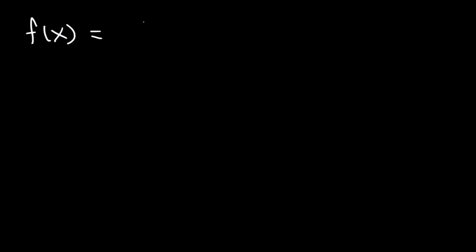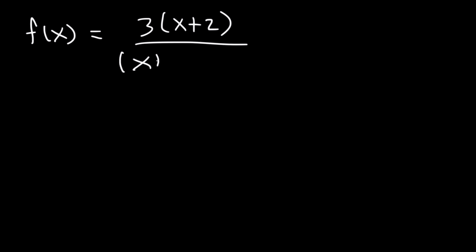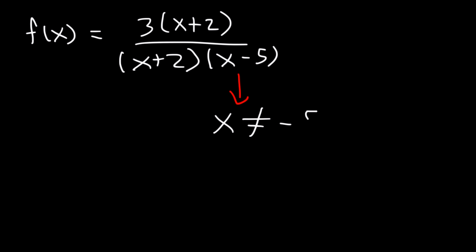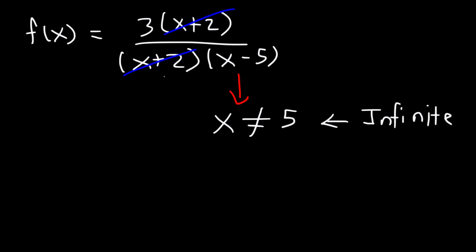Now what about a function like 3 times (x plus 2) divided by (x plus 2)(x minus 5)? The x minus 5 factor in the denominator leads to a vertical asymptote, so x cannot equal positive 5 — that is an infinite discontinuity. Anytime it's associated with a vertical asymptote, it's an infinite discontinuity. Now notice that we can cancel x plus 2; however, this is still a point of discontinuity, so x cannot equal negative 2. But this type of discontinuity is known as a hole if it can be canceled.